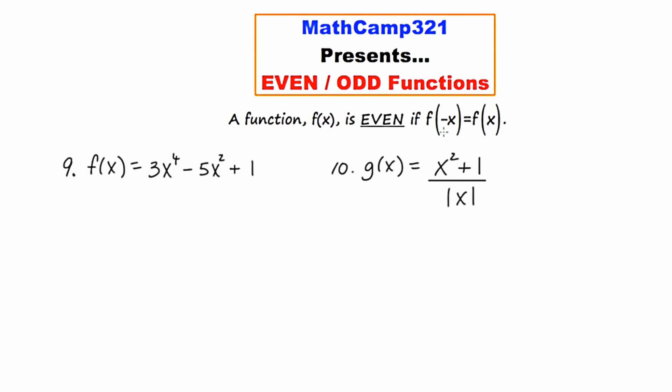So when you plug in negative x and you end up getting back what you started with, then it's going to be even. I've given two examples. Number nine says f of x is equal to 3x to the fourth minus 5x squared plus one. I don't know what the graph of this looks like — I don't have a graphing calculator — but I'm going to assess its symmetry right now by doing this test for even.